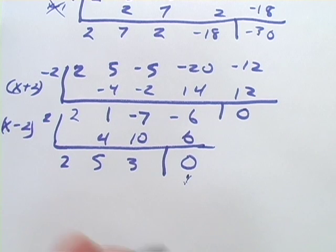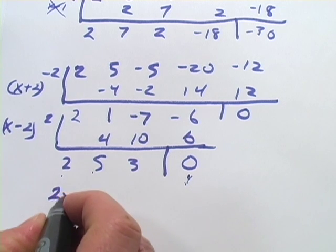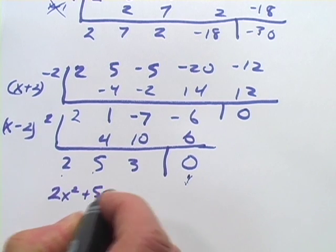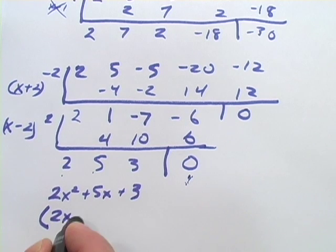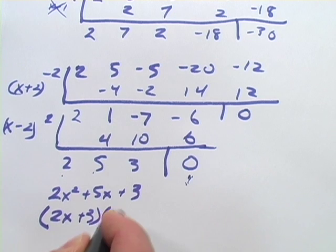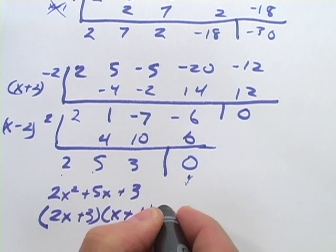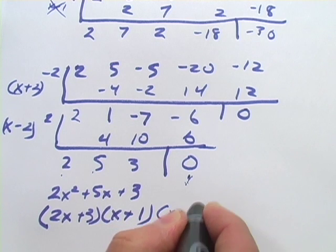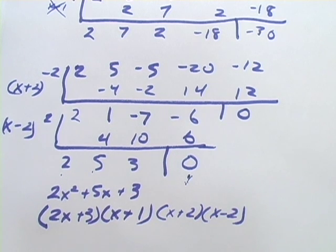We've got 2 out of our four factors. And this is a quadratic now. So 2x² + 5x + 3. And I think we can factor that to 2x + 3 and x + 1. So to make our total list of factors, I'm going to add the x + 2 and the x - 2. And we have done it. We've factored that fourth-degree using synthetic division.